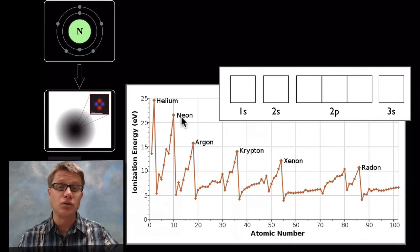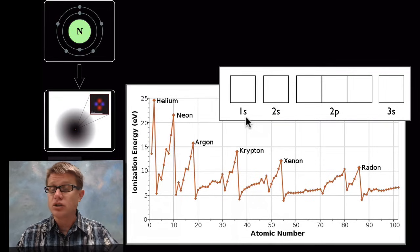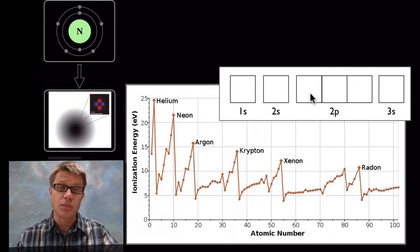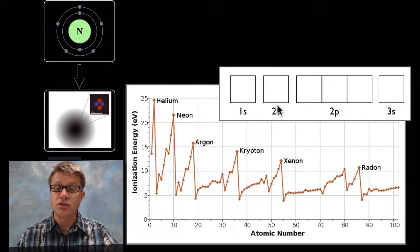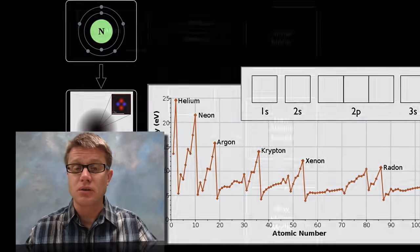And so we had to develop a new model. And that model consists of shells and now subshells. And then those subshells are further divided into orbitals. In other words why would the ionization increase and then drop down again? It's because of the shielding effect of this 2s orbital. And why would it change here? It has to do with electron electron repulsion.